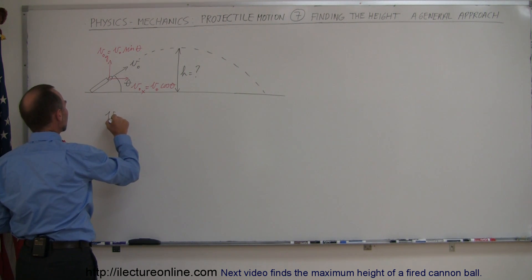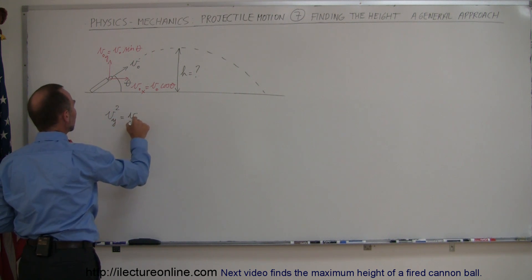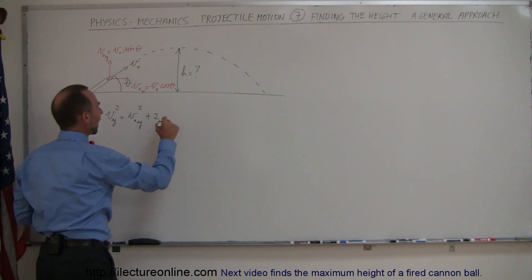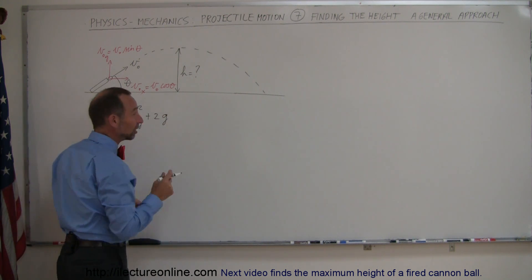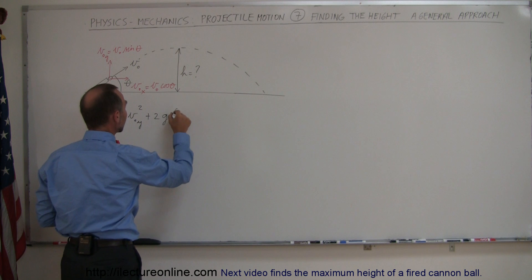v initial squared, or v final squared, and of course would be in the y direction, equals v initial in the y direction squared plus 2 times acceleration, which in this case is g, the acceleration due to gravity, times the change in the height.